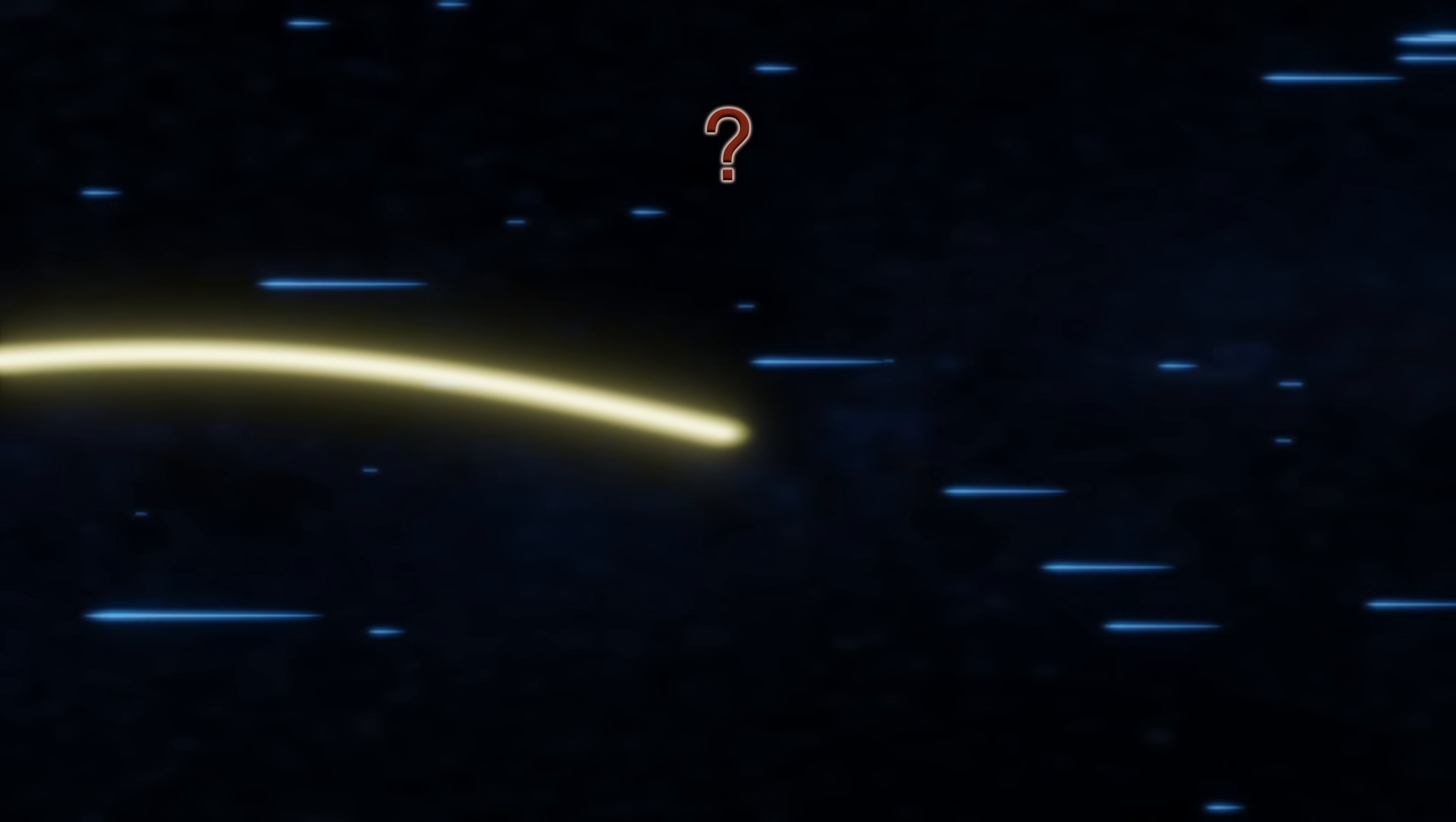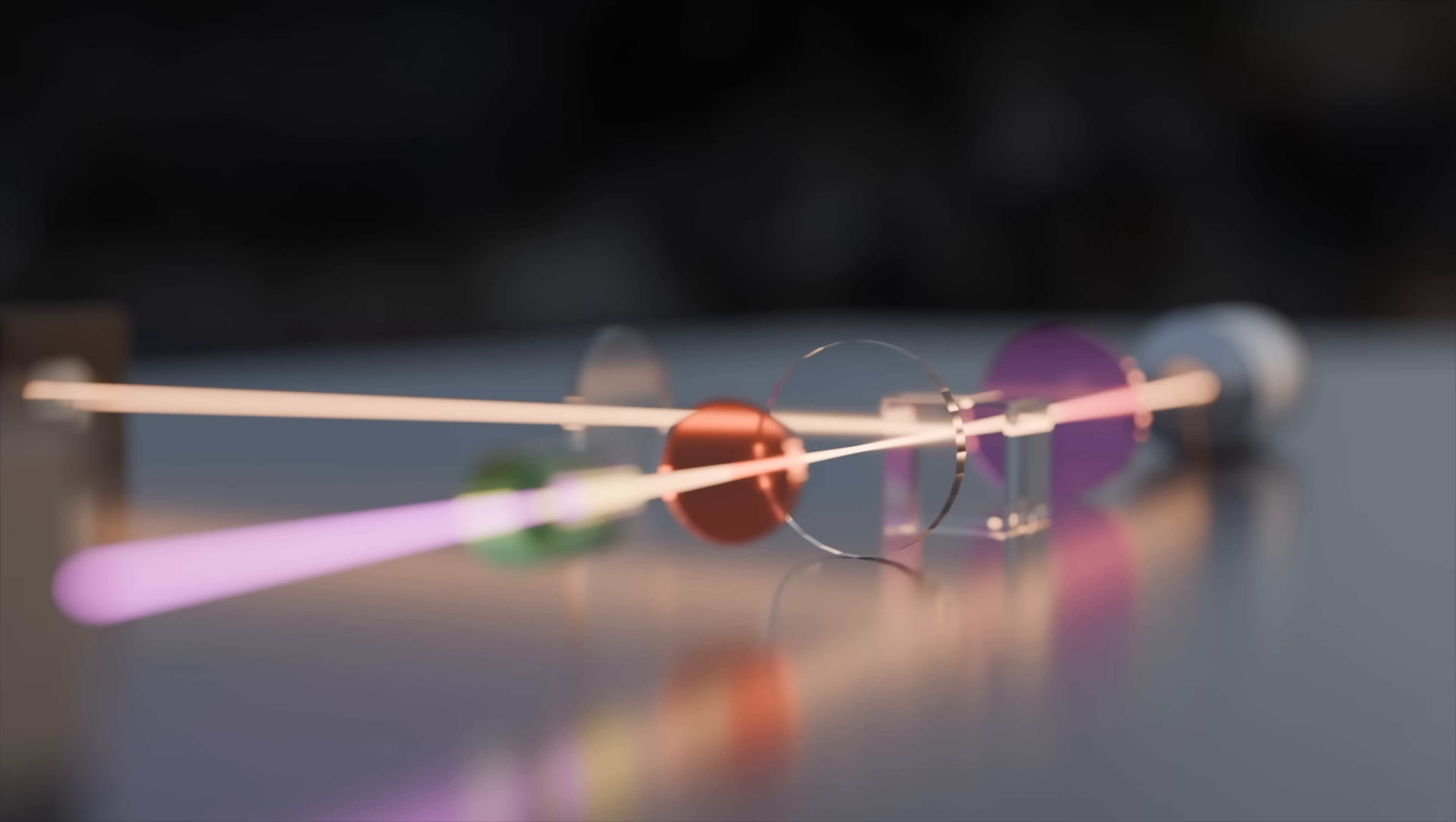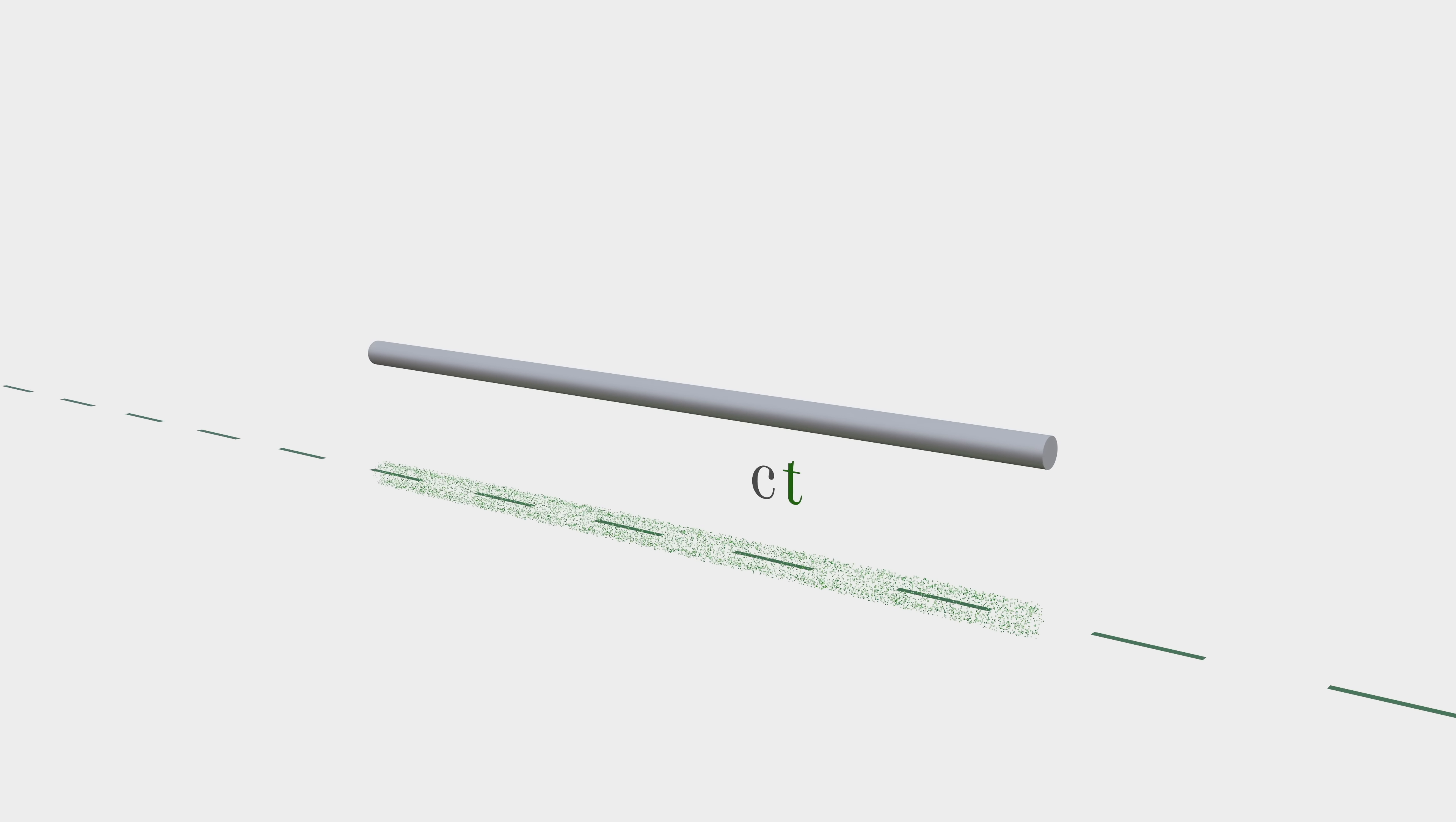But what light beam? Traveling where? A light beam can do a lot of things. Propagate in different directions, reflect here and there, etc. So where does this fourth rod, spanning this traversed distance, actually end up?